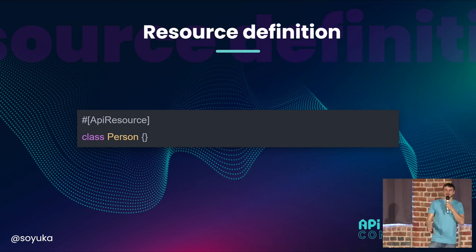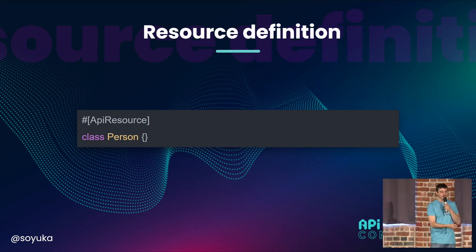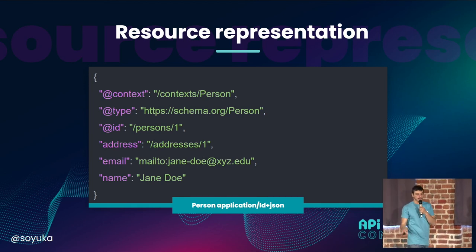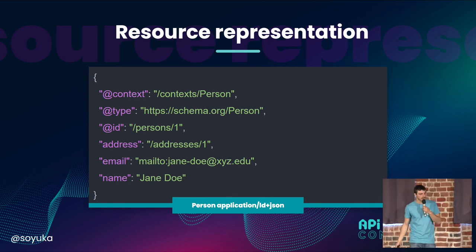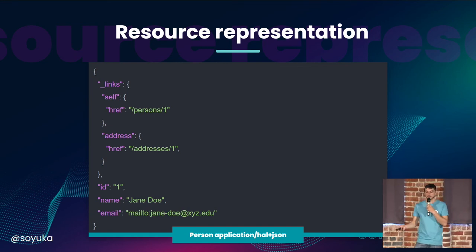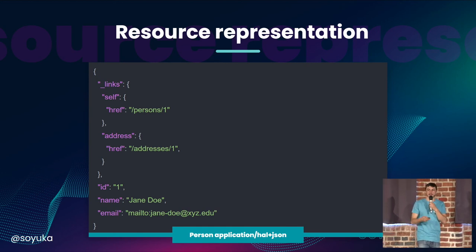And this is how we can define a resource in API Platform today. Its representation can be, for example, in JSON-LD like this, or like this for the Hypertext Application Language, which is another format. But those two representations are still the same resource.